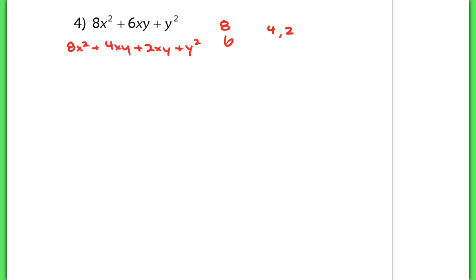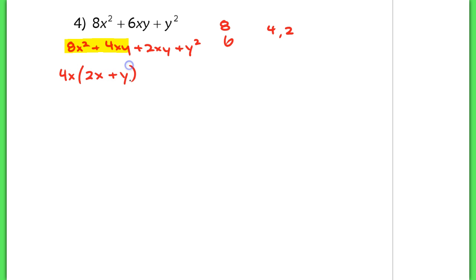Now I just factor by grouping again, so I take the first two terms and take out the GCF. The GCF here would be a 4 and an x, so I'm left with 2x plus y. Now in the next two terms, if I take out a GCF, the GCF here is just a y.